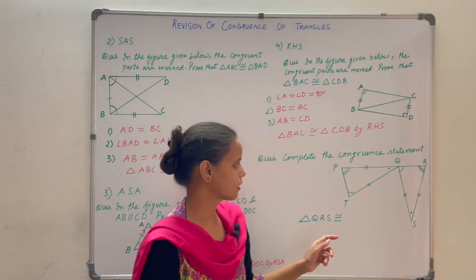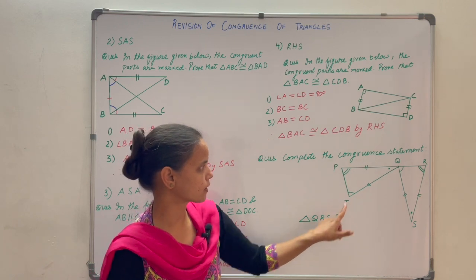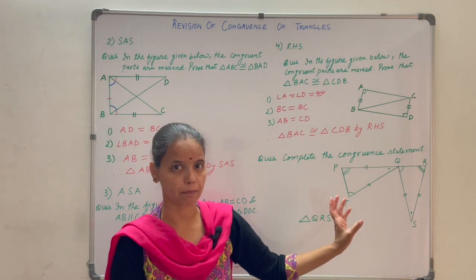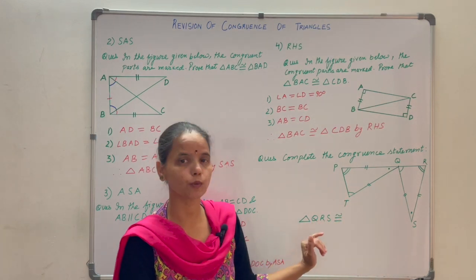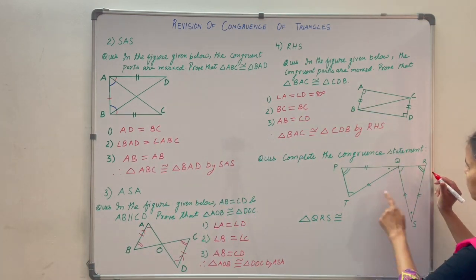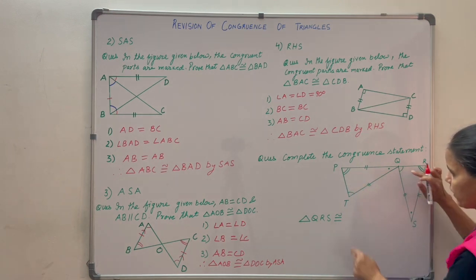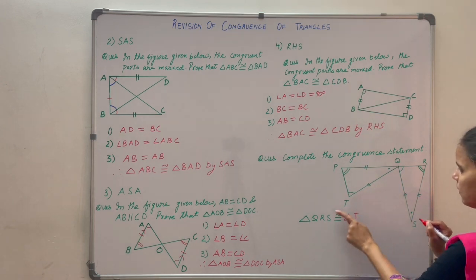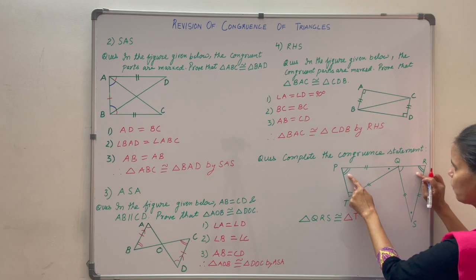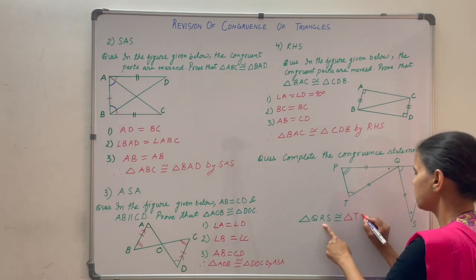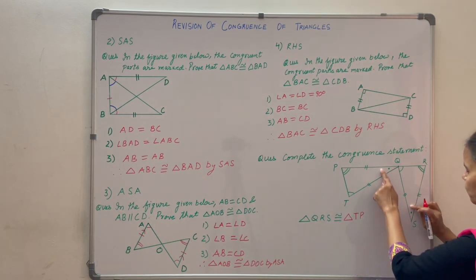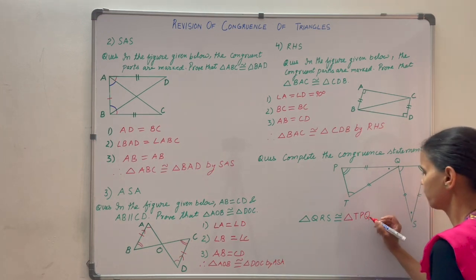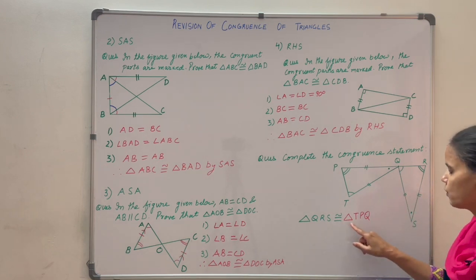Complete the congruence statement. Two triangles are given. Triangle QRS — where Q corresponds to T, R corresponds to P, and S corresponds to Q, as marked by the equal markings on the figure. Therefore, triangle QRS is congruent to triangle TPQ.